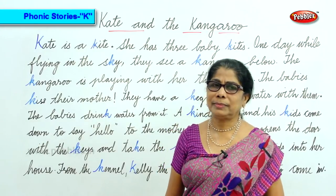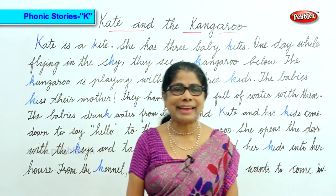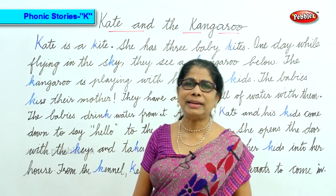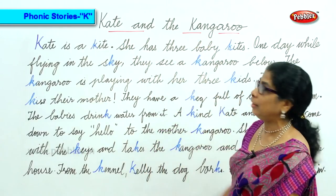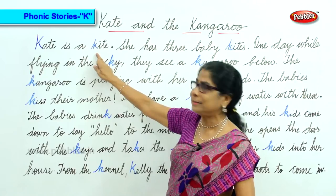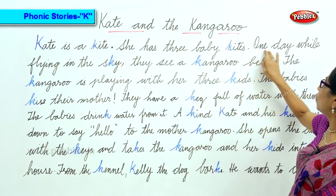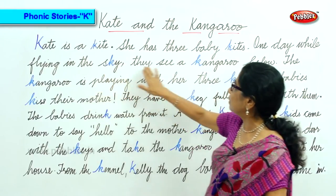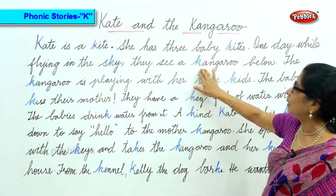We are now doing the K sound in a nice, very interesting story: Kate and the Kangaroo. We will read through the story and concentrate on the K sound. Kate is a kite — you fly kites. She has three baby kites.